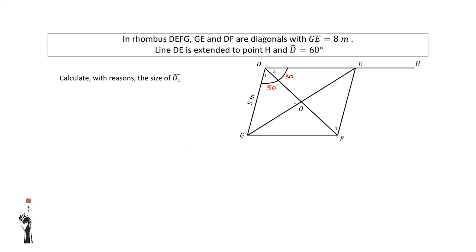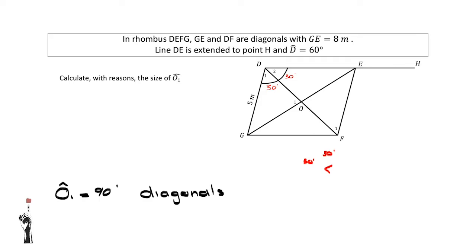Always insert any answers you've calculated onto your sketch, as you may use them in further questions. Now, calculate with reasons the size of angle O1. Angle O1 is equal to 90 degrees. The properties of a rhombus state that the diagonals of a rhombus bisect each other perpendicularly. Reason: diagonals of a rhombus bisect each other perpendicularly.